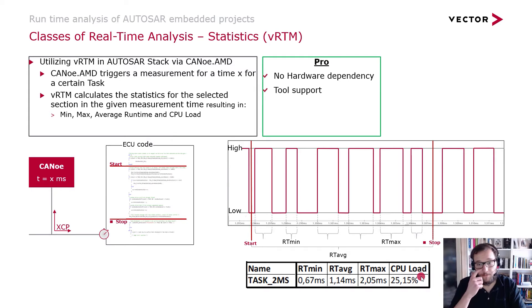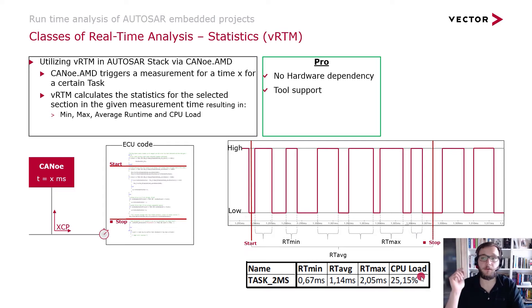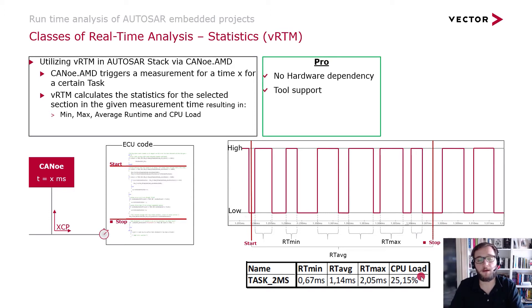Let's have a look at the benefits of this solution. The benefit is definitely that you have no hardware dependency, so you don't need an oscilloscope, you don't need a debugger, and you do not need any debugging support within your microcontroller. Additionally you have tool support: it's possible to configure the RTM module within the DaVinci configurator, and you have CANoe AMD to start and stop the measurements and gather the data.